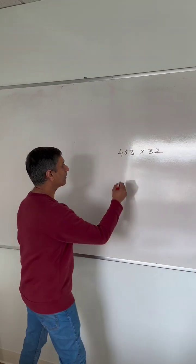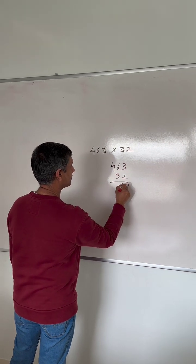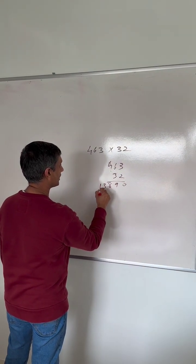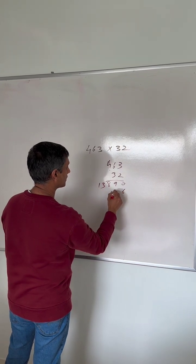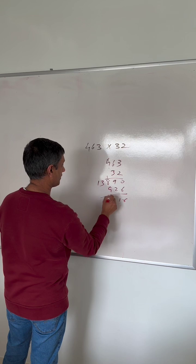You want me to solve this? Yeah, solve it. Do the math. Do some long multiplication. 463 times 32. 3 times 3 are 9, 6 times 3 are 18, 4 times 3 are 12 and 13. 3 times 2 are 6, 6 times 2 are 12. 9, 6, 18.